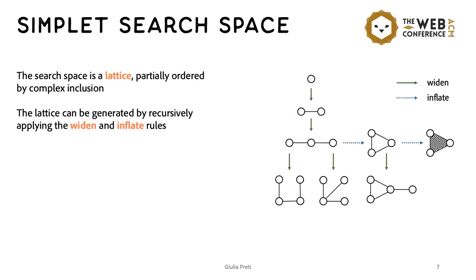Since our frequency measure is anti-monotone, we can examine simplets of increasing size. The search space is therefore a lattice. In each level, we have nodes representing simplets with the same number of vertices. And a directed edge connects two nodes if the right node can be obtained from the left via the application of two kinds of rules, widen and inflate.